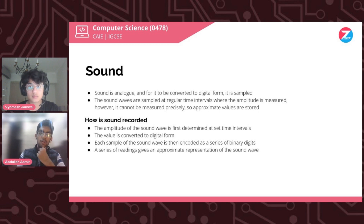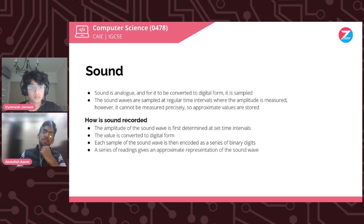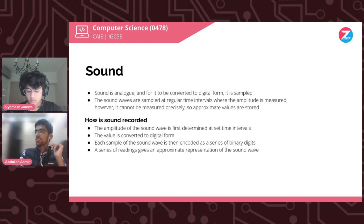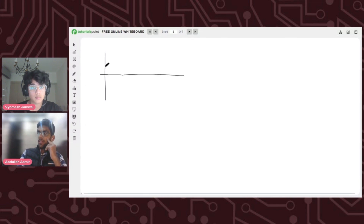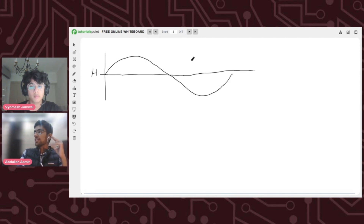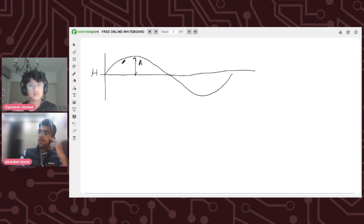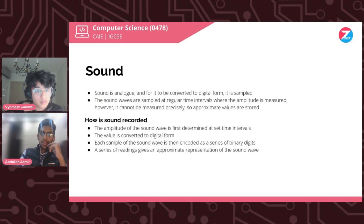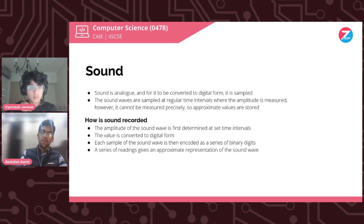Moving on to sound — sound is an analog value, as you would know from physics, so it has to be converted to digital form. Sound travels in waves, and waves have amplitudes. The microphone measures the amplitude at set time intervals, and each calculated value is put into digital form and then into binary so it can be stored. On the whiteboard: this represents time along the axis. The microphone takes the amplitude at this point, this point, and this point, storing each amplitude value.